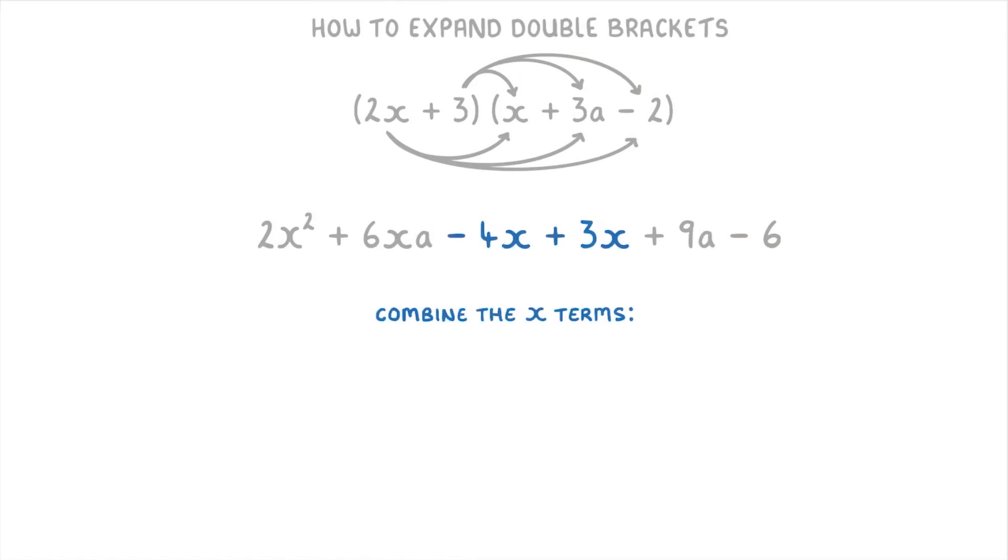And if we combine the x terms, then it would be 2x squared plus 6xa minus x plus 9a minus 6.